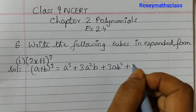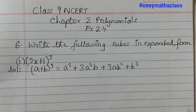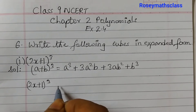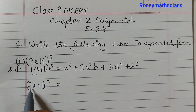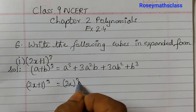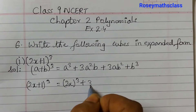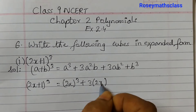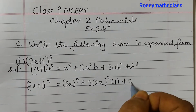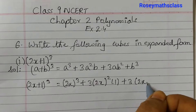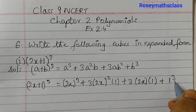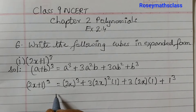So (2x + 1)³: here a is 2x and b is 1. This gives us (2x)³ + 3(2x)² × 1 + 3(2x) × 1² + 1³. Now we will simplify this.